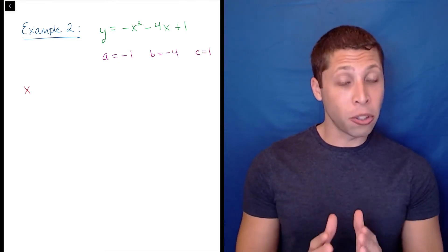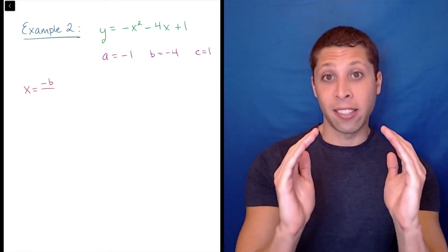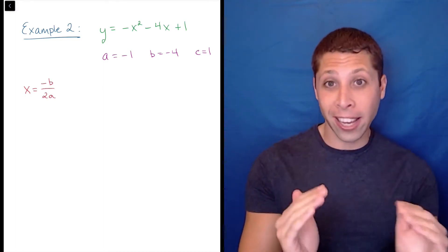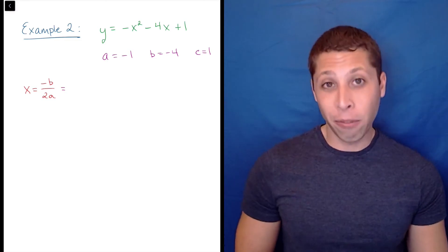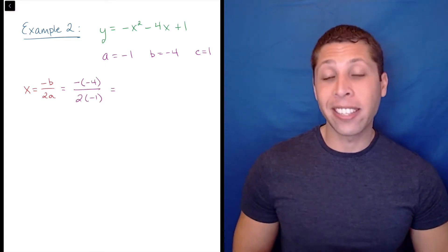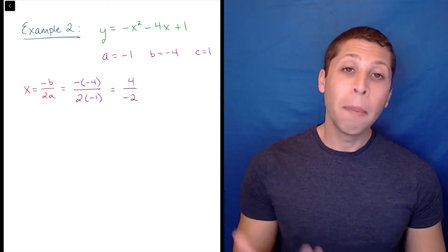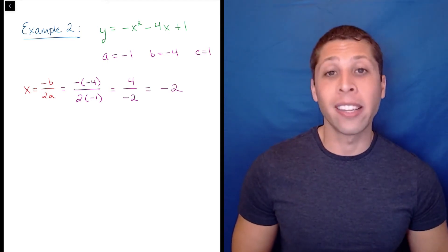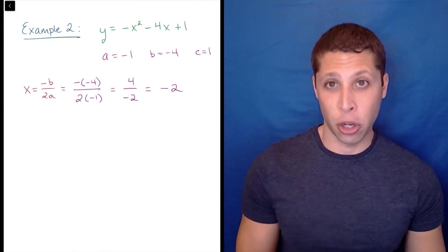When you substitute, use parentheses so that you don't lose those negatives. Negative negative 4 over 2 times negative 1. The two negatives on the top become a positive 4, but the negative on the bottom means that the axis of symmetry is x equals negative 2.